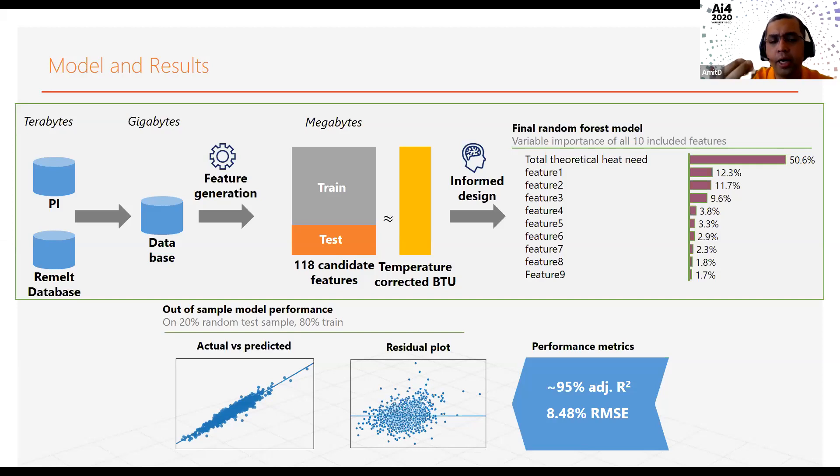we basically brought them to a single database and created various features from that. Going into the model, we had 118 candidate features. We had to adjust our target such that, I mentioned that we used to have overcooking of the metal, which meant that we actually went over and above the BTU requirement that the metal required to reach a lower temperature. We corrected using extrapolation, we corrected the BTU measurements, and then we trained the model on that.